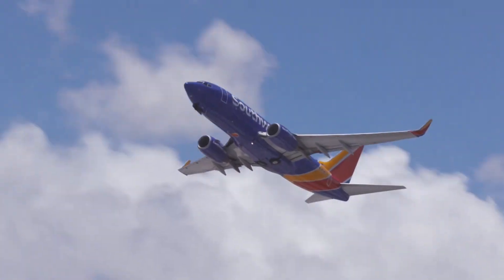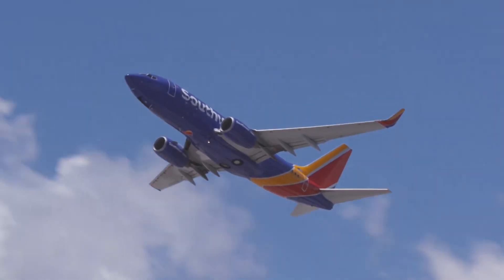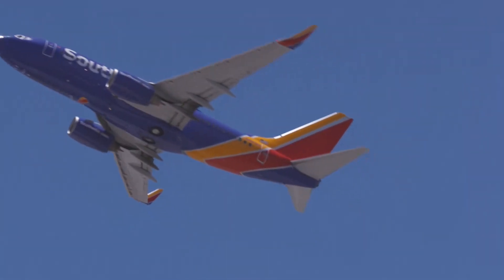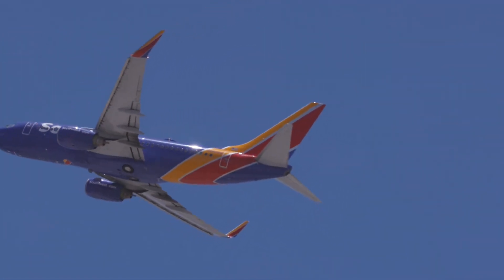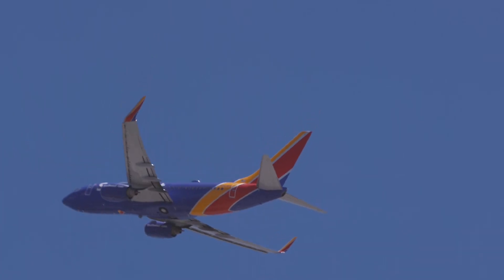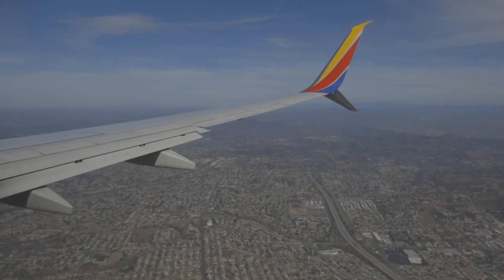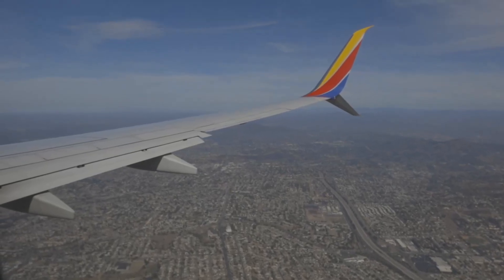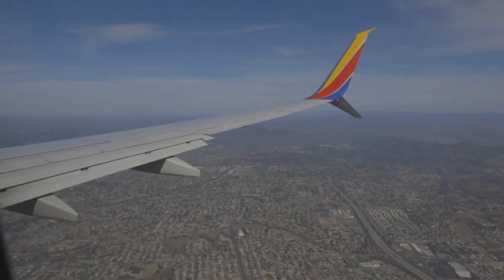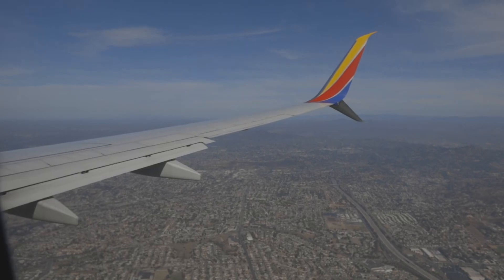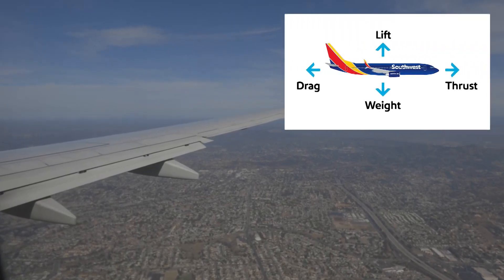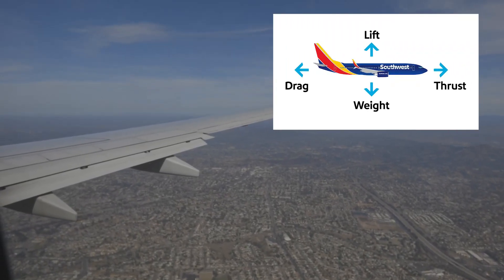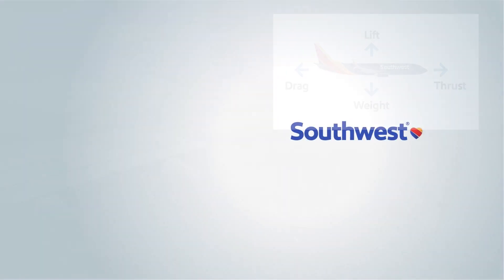Finally, we raise the landing gear to reduce our drag. As you can see, all four forces of flight are involved in a takeoff. So the next time you are at 30,000 feet on a Southwest Airlines flight, remember — it's all because of lift, weight, thrust, and drag.